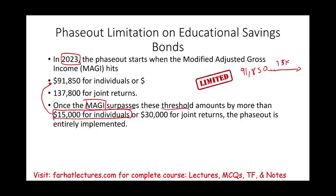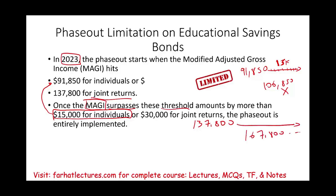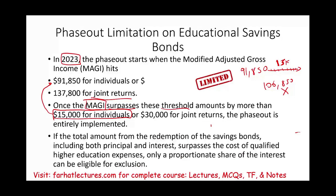Once you get into this range, you start to lose your tax-free incentive. Once you go above $91,850 plus $15,000 — which is $106,850 — you lose this incentive entirely. For joint returns, you start at $137,800 with a higher range of $30,000, so above $167,800, if your modified adjusted gross income exceeds that, you no longer qualify for this exclusion.